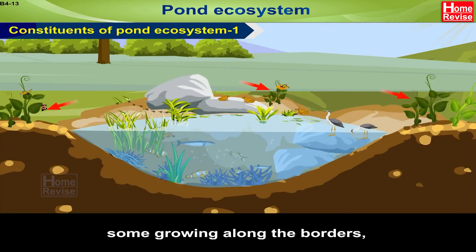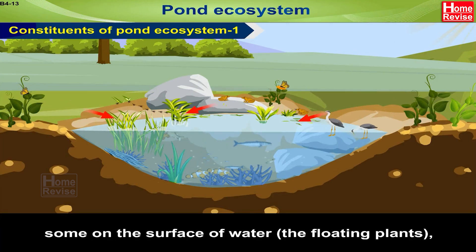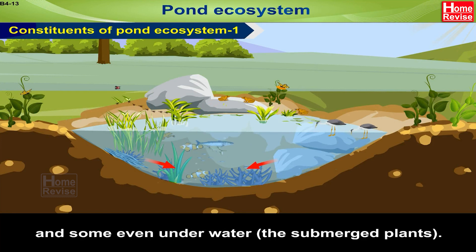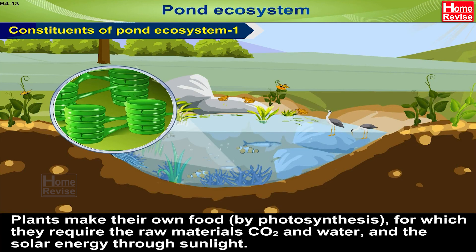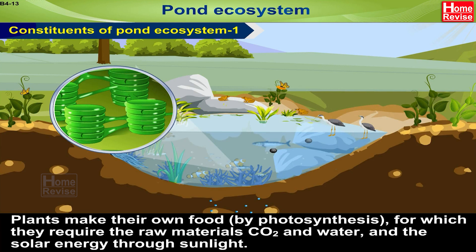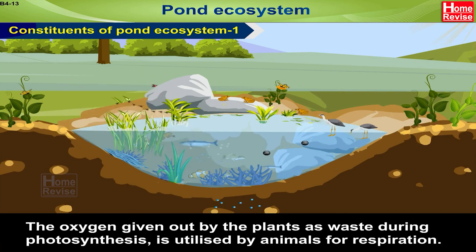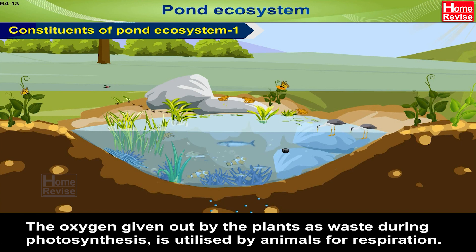Some plants grow along the borders, some on the surface of water — the floating plants — and some even underwater, the submerged plants. Plants make their own food by photosynthesis, for which they require carbon dioxide and water, and solar energy through sunlight. The oxygen given out by plants as waste during photosynthesis is utilized by animals for respiration.